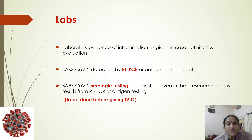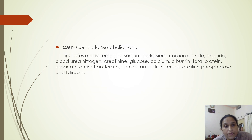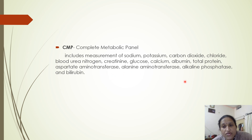SARS-CoV-2 detection should be done with RT-PCR or antigen testing, and serological antibody testing should be done even in the presence of a positive RT-PCR or antigen test — this is essential if we are planning to give IV immunoglobulins. The complete metabolic panel includes serum electrolytes, blood urea nitrogen, serum creatinine, glucose, calcium, albumin, total protein, liver enzymes, alkaline phosphatase, and bilirubin.